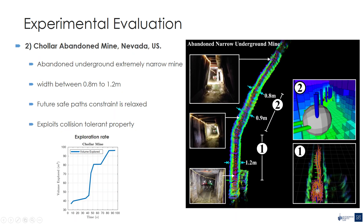The second experiment was conducted in the abandoned Collar Mine. This is an underground, extremely narrow mine having widths ranging from 0.8 meters to 1.2 meters. The aim of this experiment is to evaluate the performance of the planner in an extremely narrow environment under the possibility of collision. The constraint of future safety paths were relaxed in this experiment due to the nature of the environment. The figure on the right shows the reconstructed map from the mission and the plot at the bottom shows the exploration rate.